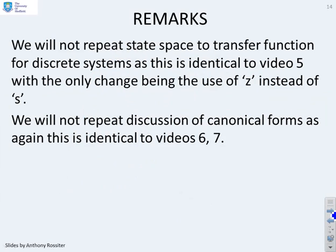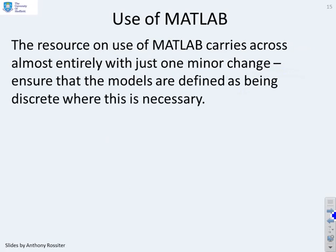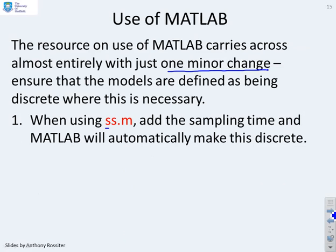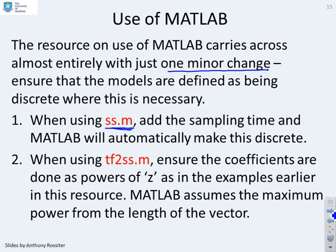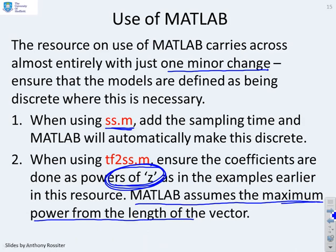Some remarks: we will not repeat the state-space to transfer function derivation for discrete systems as it is identical to video 5, with the only change being Z instead of s. Similarly, canonical forms are not repeated, as they are identical to continuous time. MATLAB usage is almost the same, but one important difference: models must be defined as discrete where necessary. When using ss.m, add a sampling time so MATLAB knows the A, B, C, D matrices represent a discrete model. When using tf2ss, ensure coefficients are entered as powers of Z, not powers of Z⁻¹.